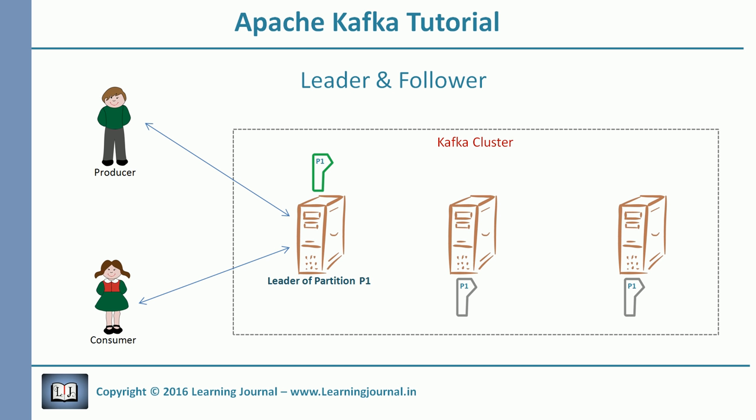That's where the followers come into play. If we create a topic with the replication factor set to 3, a leader of the topic is already maintaining the first copy. We need two more copies, so Kafka will identify two more brokers as followers to make those two copies. These followers will copy the data from the leader. They don't talk to the producer or consumer — they just copy data from the leader.